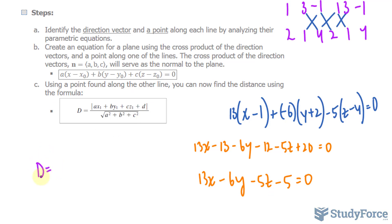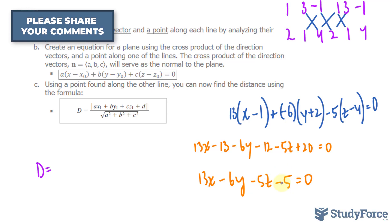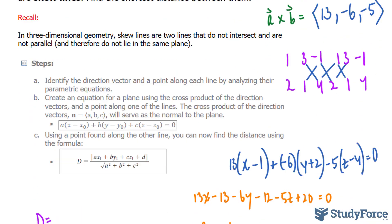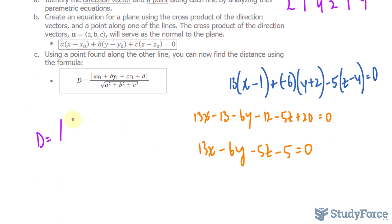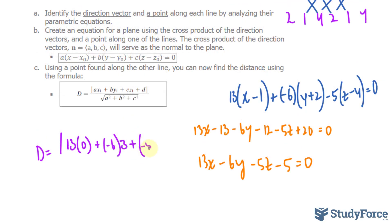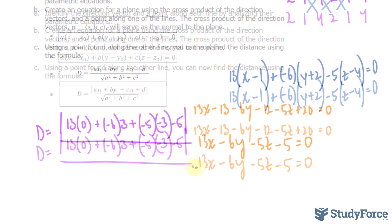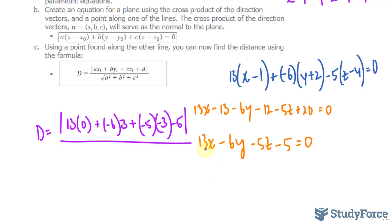We have the distance is equal to a, b, c, and d represents a, b, c, and d of our equation. Multiply to the point that hasn't been used yet, 0, 3, negative 3. So we have the absolute of 13 times 0 plus negative 6 times positive 3 plus negative 5 times negative 3 minus 5 divided by the magnitude of the normal vector of this equation, which is 13, negative 6, and negative 5. So 13 squared minus 6 squared plus negative 5 squared.